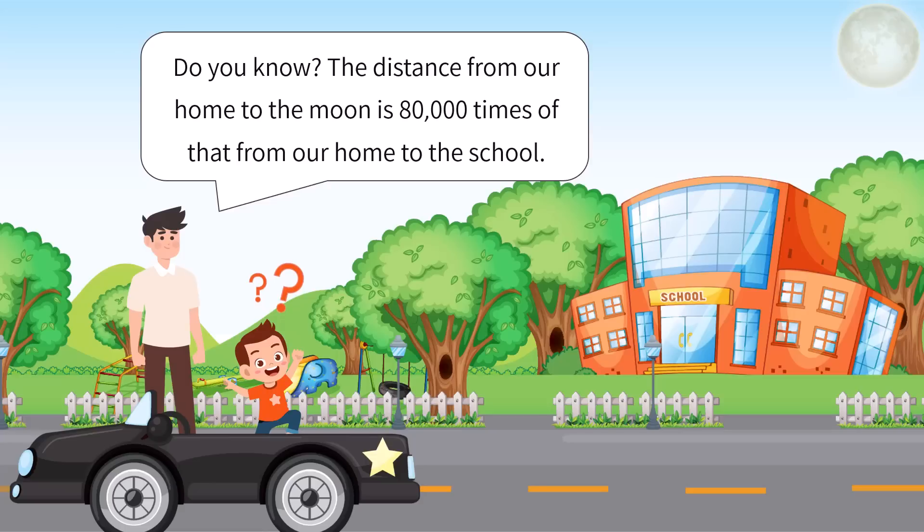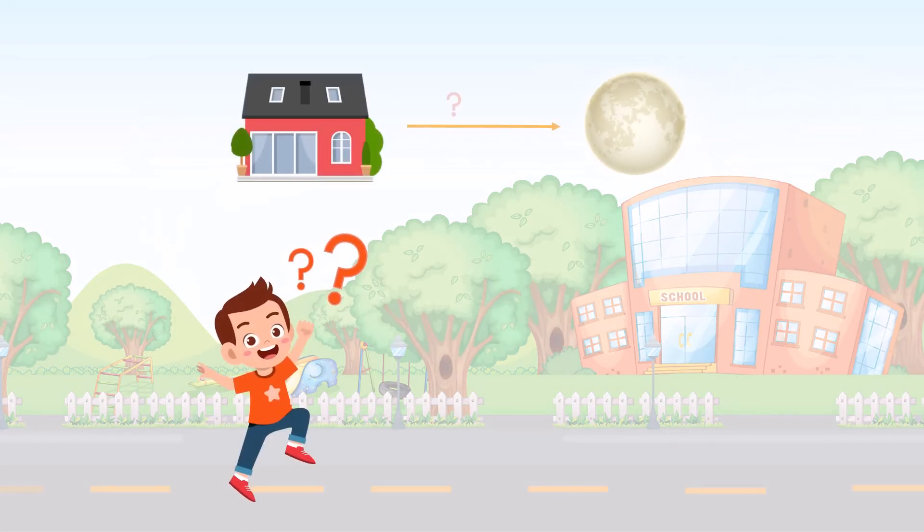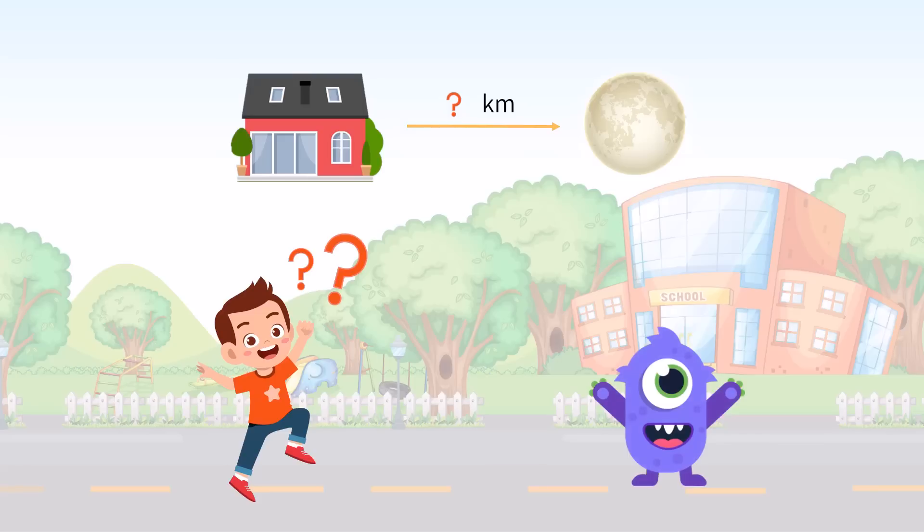Timmy's dad said one day on the way to school. Timmy was wondering what's the distance from home to the moon. Lumos decided to help him find it. We know that the distance is five kilometers between Timmy's home to the school, so what we are going to find is the product of five times 80,000.